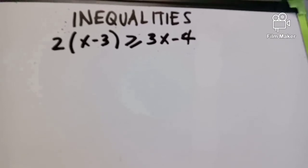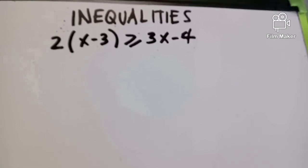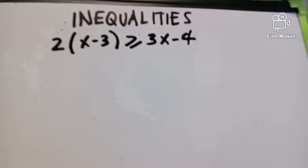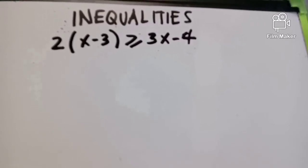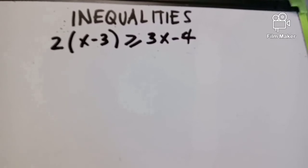Welcome back to my YouTube channel. Today's video, we continue with inequalities. We have the given expression: 2 times (X minus 3) greater than or equal to 3X minus 4. How do we solve this as an inequality?